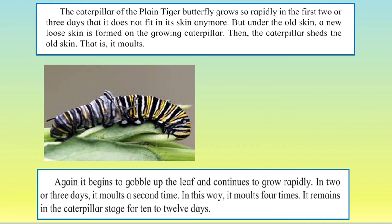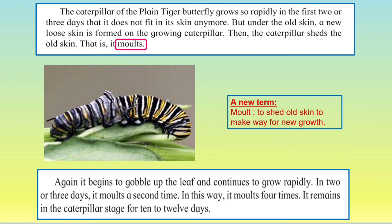The caterpillar of the plain tiger butterfly grows so rapidly — rapidly means so fast — in the first two or three days that it does not fit in its skin anymore. But under the old skin, a new loose skin is formed on the growing caterpillar. Then the caterpillar sheds the old skin — that is, it molts. To shed the old skin to make way for new growth: we learn a new term here — molting. So when the caterpillar gets fat after eating so much, the old skin gets tighter, so it sheds it off and grows a new skin. This shedding of the old skin is called molting.